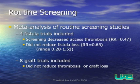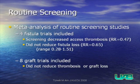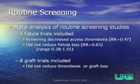Our last topic is routine screening of the asymptomatic patient with a hemodialysis fistula. Several studies have used frequent repeated ultrasounds to detect abnormalities before they lead to thrombosis. A meta-analysis of 12 studies — four of which were fistula trials — found that screening did decrease excess thrombosis to less than half the typical rate. However, even though the thrombosis rate decreased, it did not reduce fistula loss, suggesting that thrombosis may be a marker of fistula failure rather than an underlying etiology. In the eight graft trials, routine screening did not reduce thrombosis or graft loss rates.